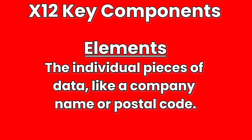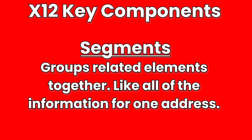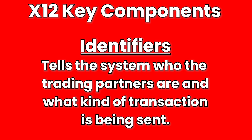Every X12 message is made up of key components. Elements are the individual pieces of data, like a company name or postal code. Segments group related elements together — for example, a segment might contain all the information for one address. Identifiers tell the system who the trading partners are and what kind of transaction is being sent. There are also over 300 types of EDI X12 transaction sets used in industries like healthcare, insurance, transportation, and finance.